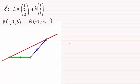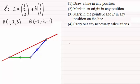So when it comes to drawing your line L, do follow these guidelines. Just draw a line in any position. Mark an origin in any position. Mark the points A and B in any position on the line. And then you'll be able to carry out any necessary calculations.